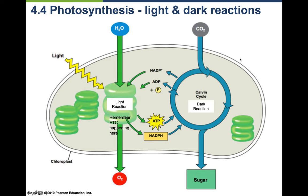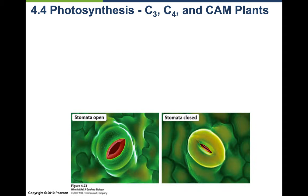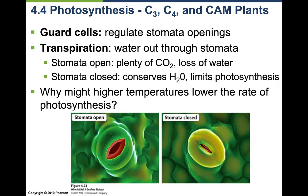Stomata are on the underside of the leaf. Guard cells regulate how much CO2 can enter the plant, and they open and close. When stomata are wide open you get lots of CO2 but lose water through transpiration. When stomata are closed you conserve water but limit photosynthesis because you can't bring in CO2 to turn into sugars.